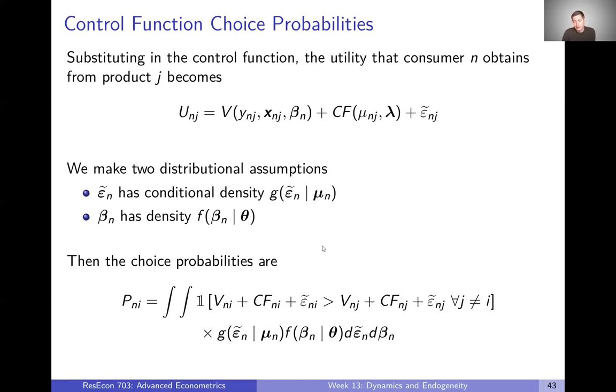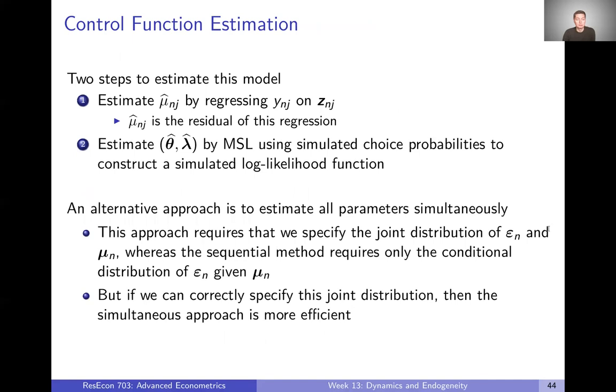Obviously we can simulate these choice probabilities, but there's one problem. We don't actually know mu. Mu is an unobserved component and it factors importantly into our control function. So what do we do? We're going to use two steps to estimate this model. In the first step, we're going to estimate mu hats by regressing Y on Z. The residual, just a simple OLS regression, is going to be our mu hat.